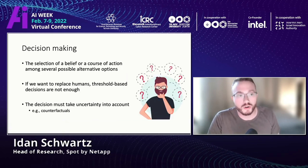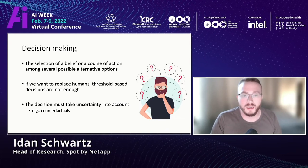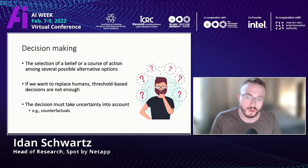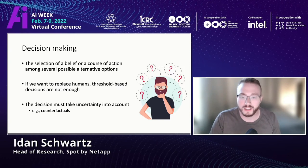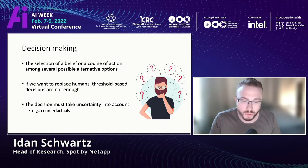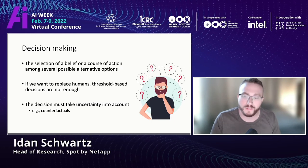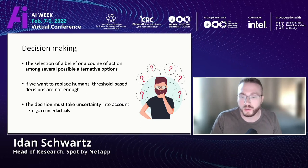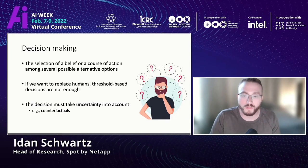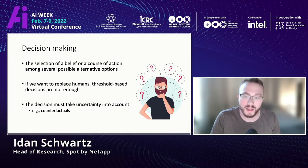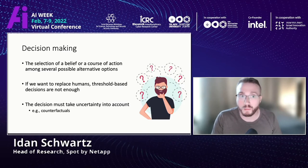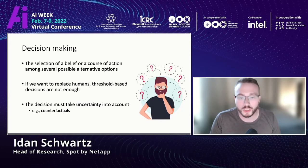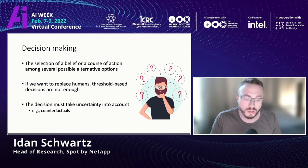The last element is decision making — the selection of a course of action among several alternative options. If we truly want to replace humans with models, we can't just use a threshold; we need to take into account uncertainty and counterfactual thinking — 'what if.' This is reflected in causality models, where we want the model to understand how much it knows about the world and what would happen if something changed. Models based only on thresholds don't have this process, which is how humans actually think.